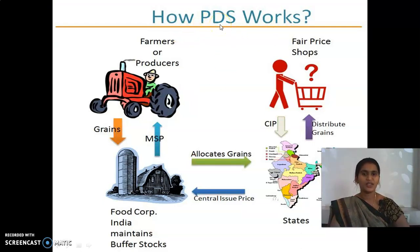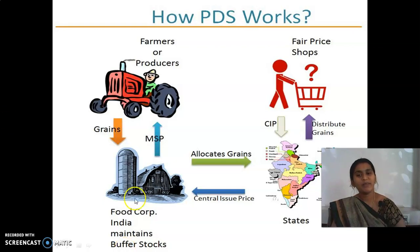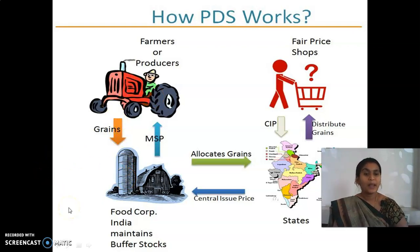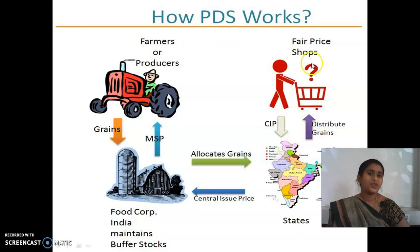Let us see how the public distribution system works. Farmers produce food grains. Through that, the Food Corporation of India purchases those grains by paying the minimum support price — a price fixed by the government for each crop. They store the purchased food grains in a buffer stock, kept in godowns and warehouses. When necessary, they allocate the food grains and issue them to the states. It is then distributed in fair price shops — that is, ration shops — to consumers at subsidized prices.